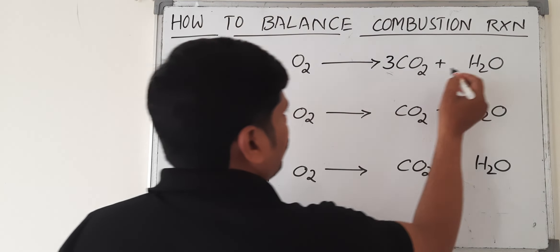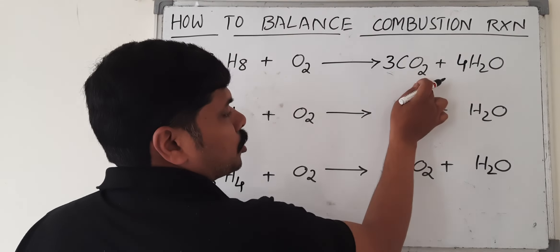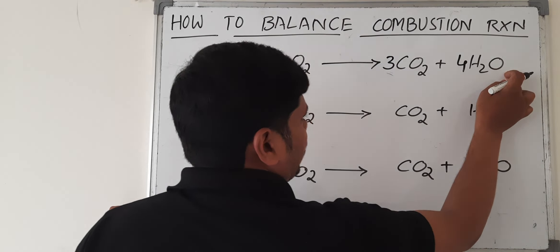Half of that many H2Os will come. Now, 3 times 2 is 6, 6 plus 4 is 10, so I can write 5 O2.